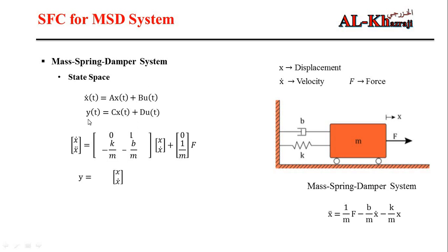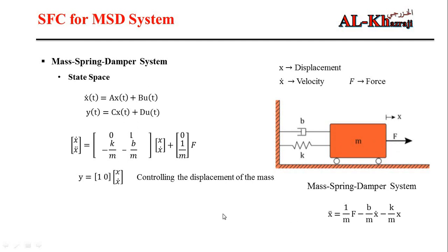For the output equation, we have two states — displacement and velocity — but we are interested in displacement. So the C matrix has 1 for x and 0 for x-dot, since we want to track position, not velocity. To summarize: A is the dynamic matrix, B is the input matrix, C is the output matrix, and D is zero.